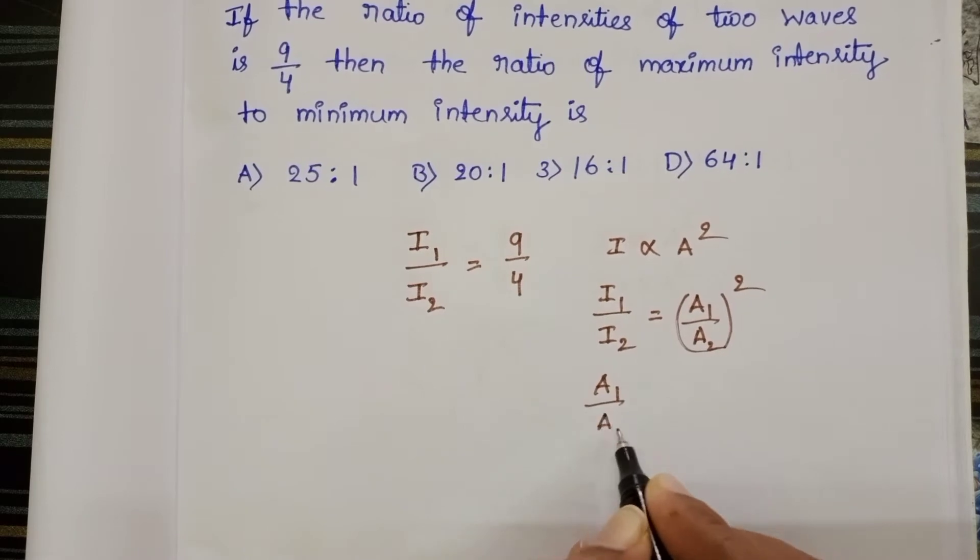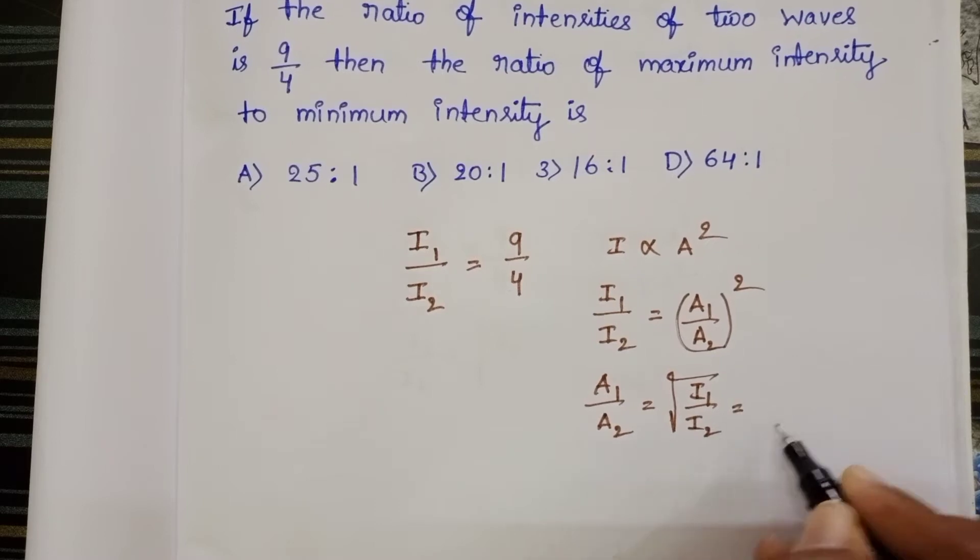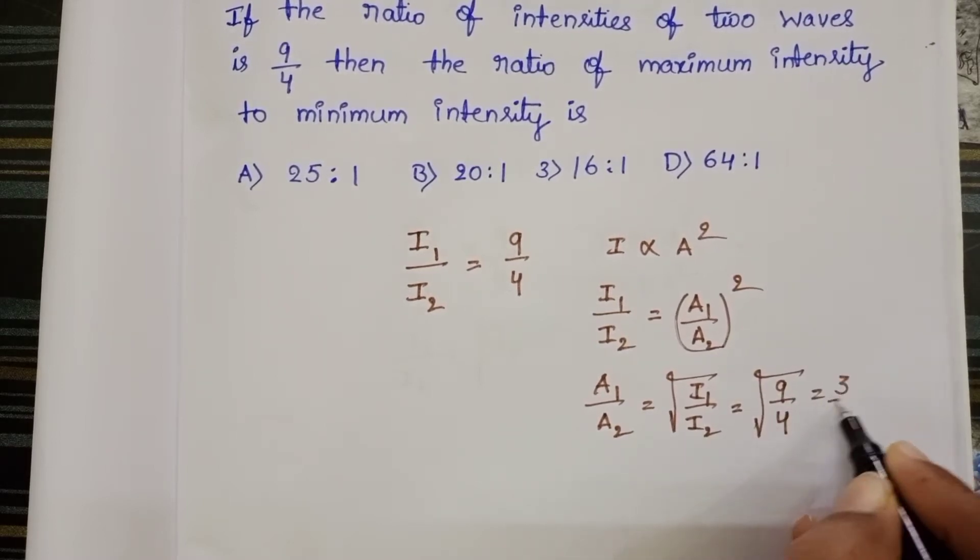A1 by A2 equals square root of I1 by I2, that is square root of 9 by 4, equals 3 by 2.